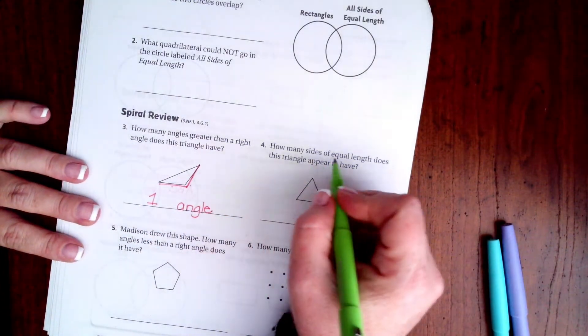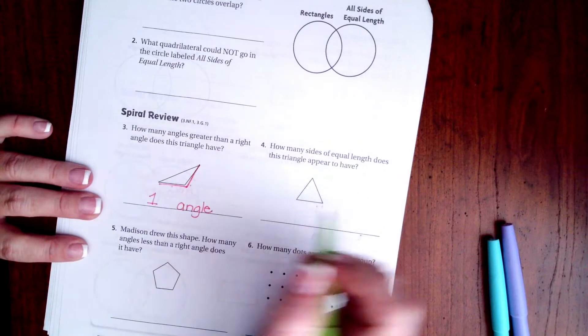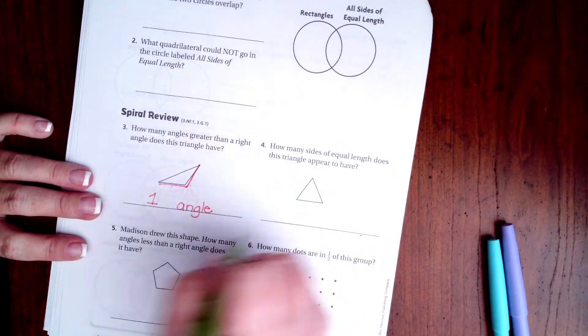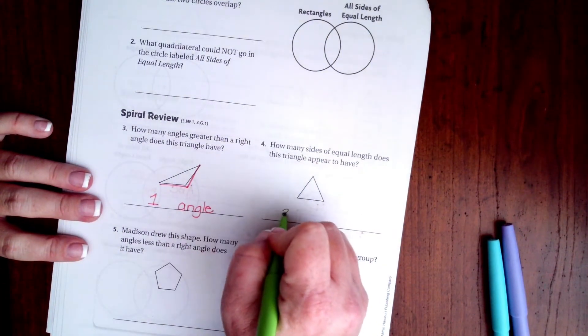How many sides of equal length does this triangle appear to have? Well, all of them are the same size, so that would be three sides.